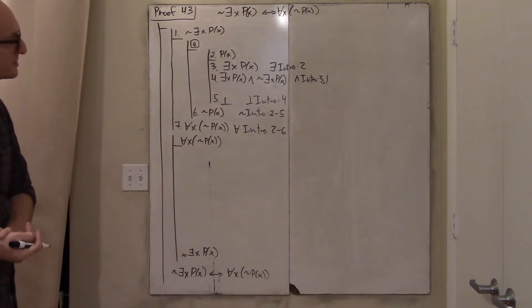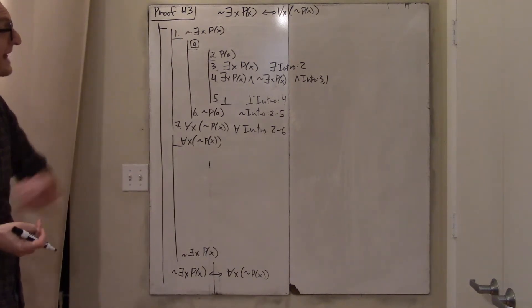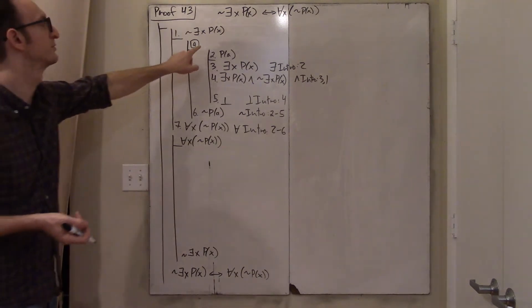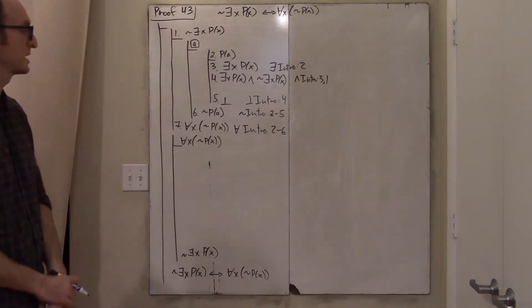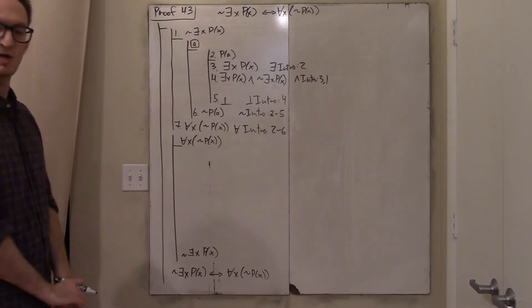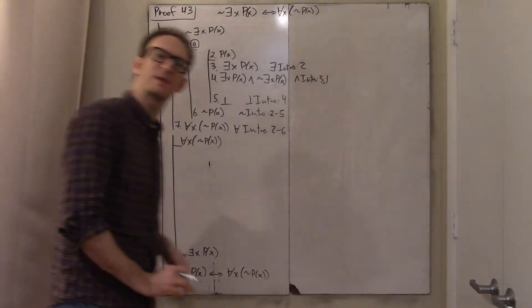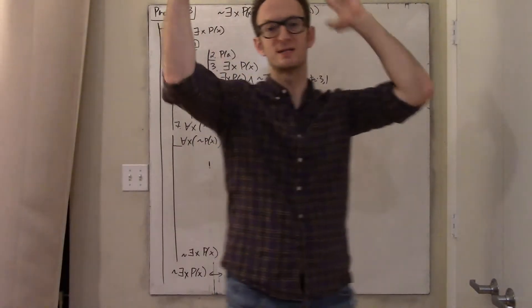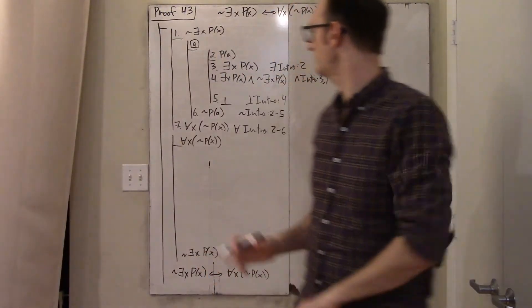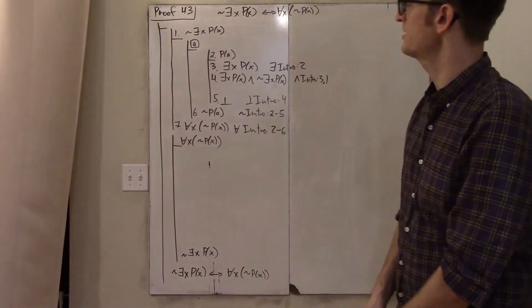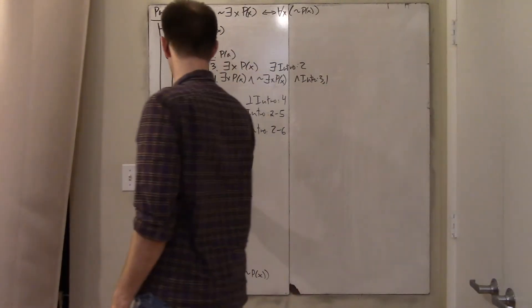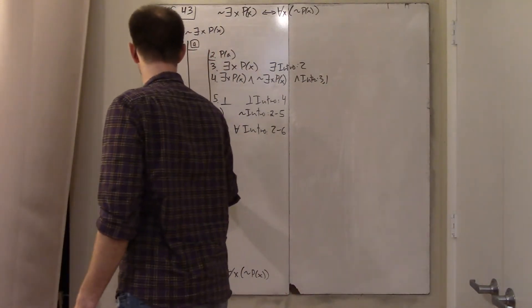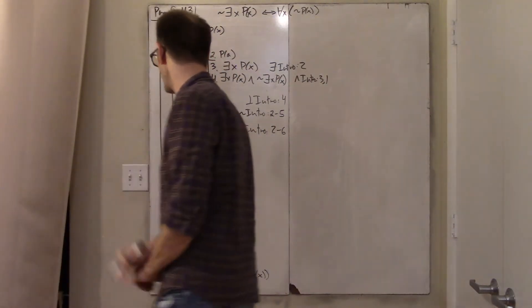Having taken an arbitrary object and shown it doesn't have property P, I conclude that everyone doesn't have property P — universal intro, lines two through six. The line where we pick the arbitrary object doesn't get a number because it's not a proposition. That completes the first direction.